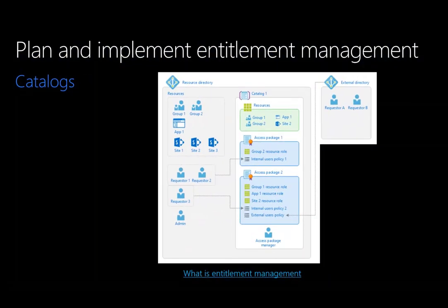A catalog is simply a container of related resources and access packages. Catalogs are used for delegations so that non-administrators can create their own access packages. Catalog owners can add resources they own to a catalog. An access package is a bundle of resources that a team or project needs and is governed with policies. An access package is always contained within a catalog. You would create a new access package for a scenario in which users need to request access.